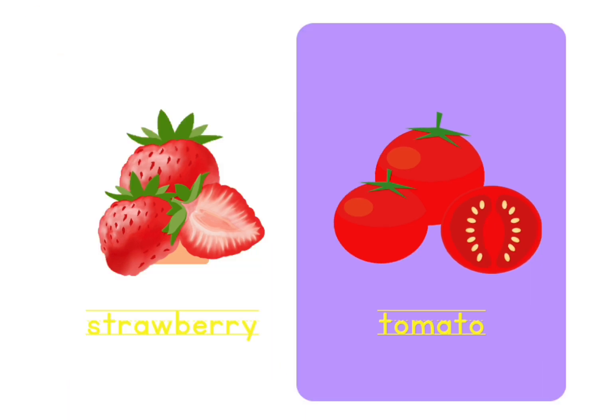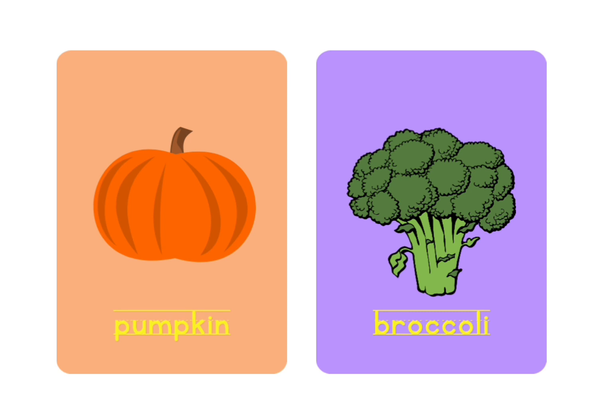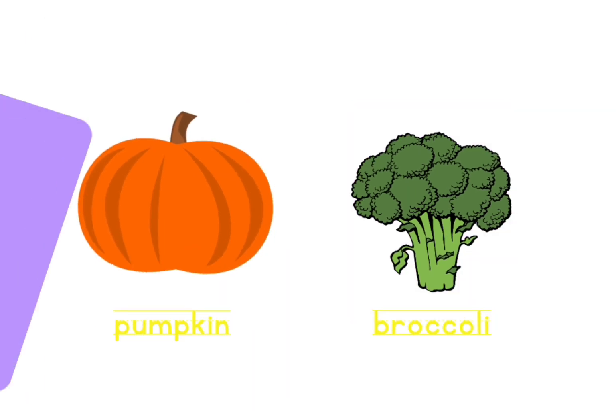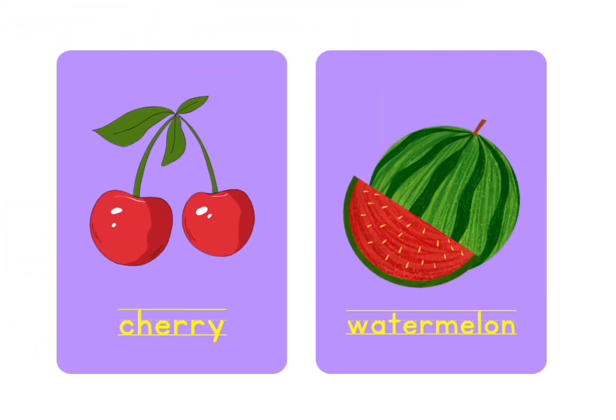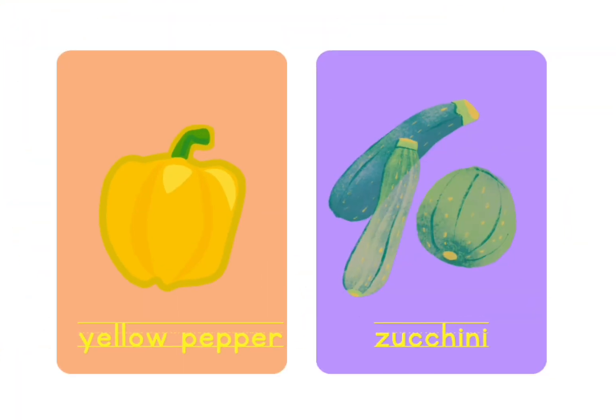T for Tomato, P for Pumpkin, B for Broccoli, C for Cherry, W for Watermelon, Y for Yellow Pepper, Z for Z — C'est parti.